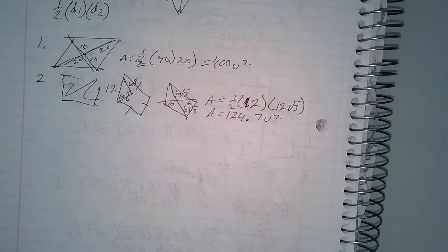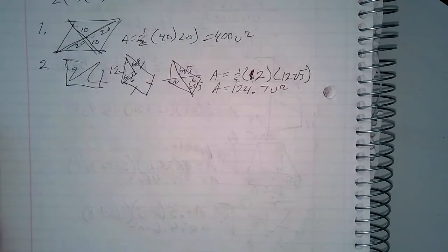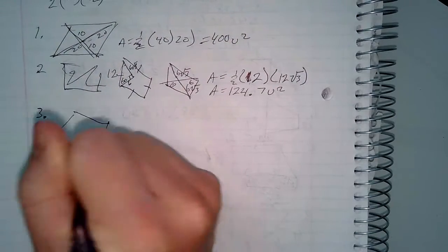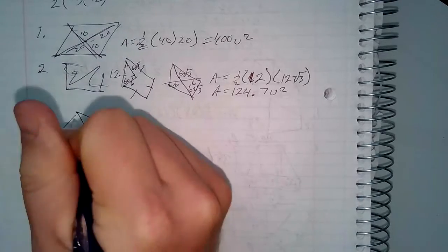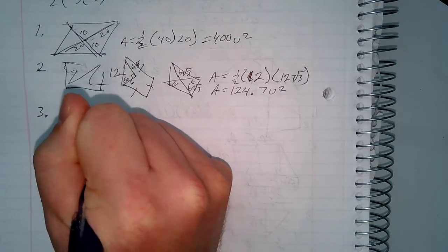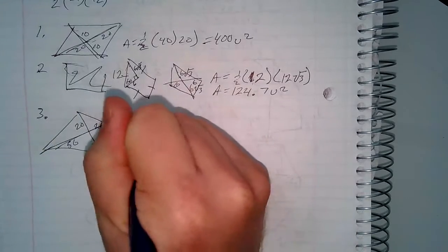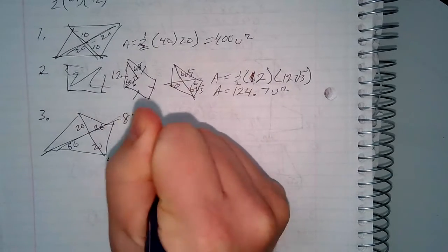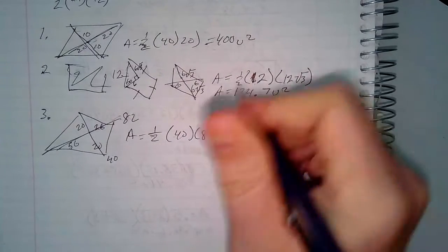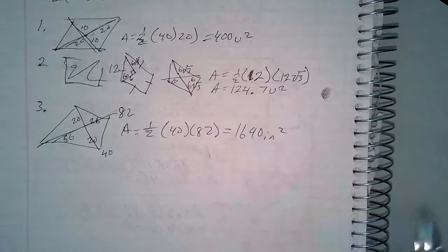Same formula for a kite. Number three: a kite with diagonals — one measures 56 + 26 = 82, and the other measures 20 + 20 = 40. Area equals one-half times 82 times 40. That gives 1640 inches squared.